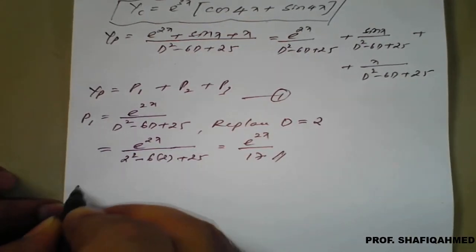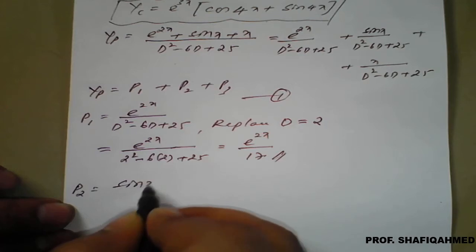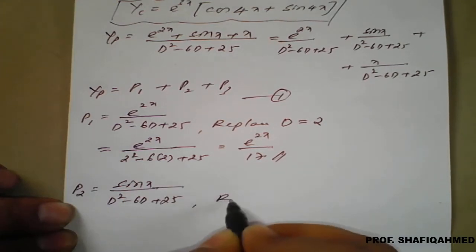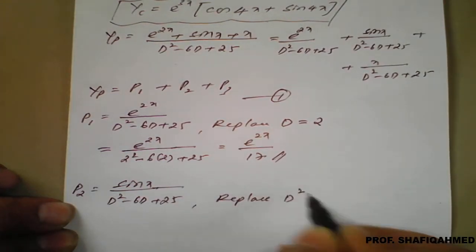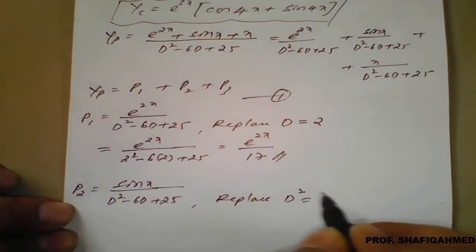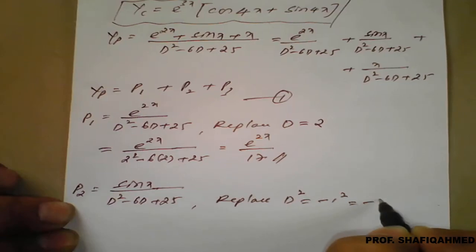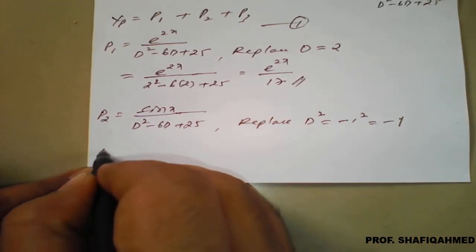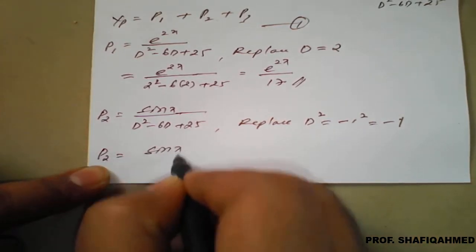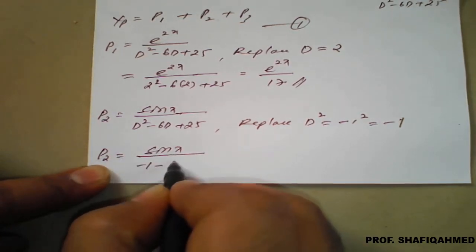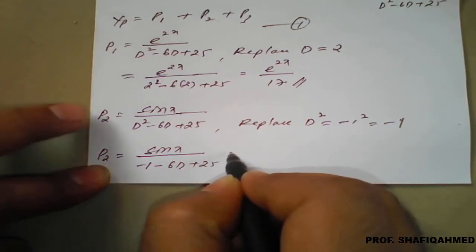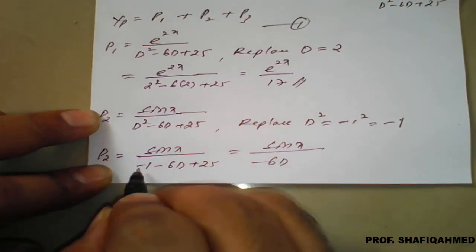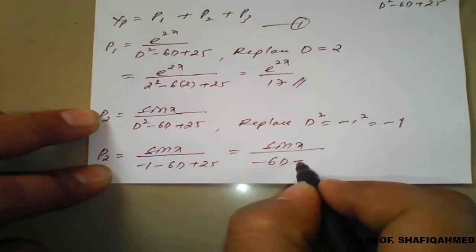Similarly, we will work out for P2. P2 is nothing but sin x divided by d squared minus 6d plus 25. Here we replace d squared equal to minus 1 squared, since the coefficient of x is 1, which is minus 1. Therefore, P2 equals sin x divided by minus 1 minus 6d plus 25.